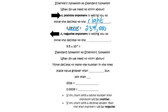A negative exponent is telling you to move the decimal to the left. So this one's a negative. So I'm going to move it one, two, three, four spots to the left, and again, fill in my zeros.